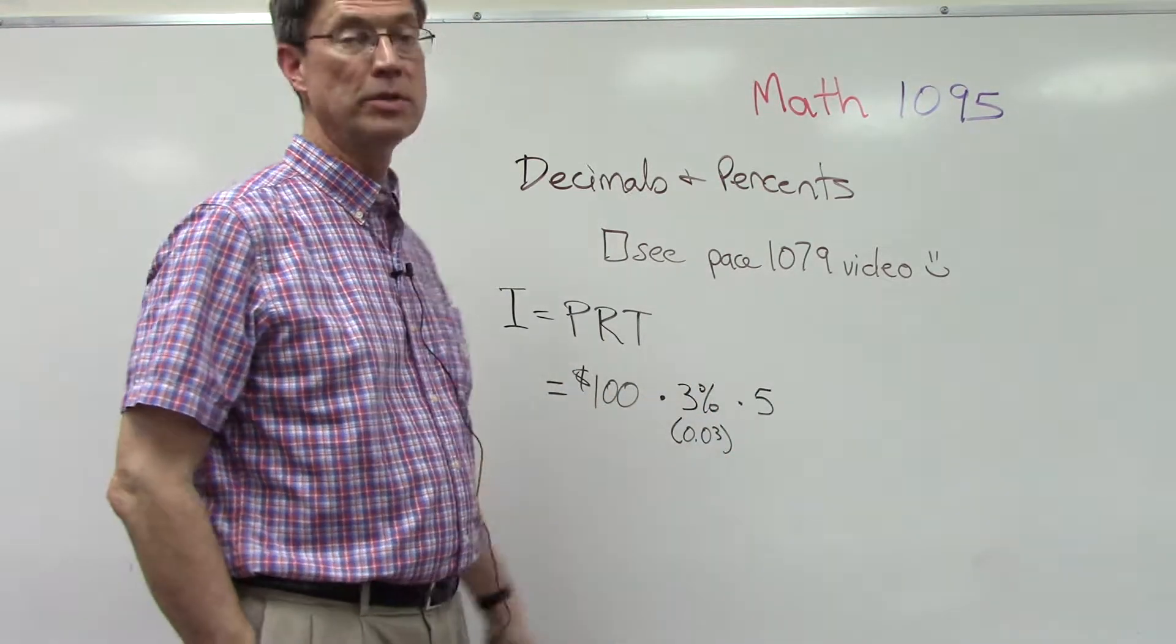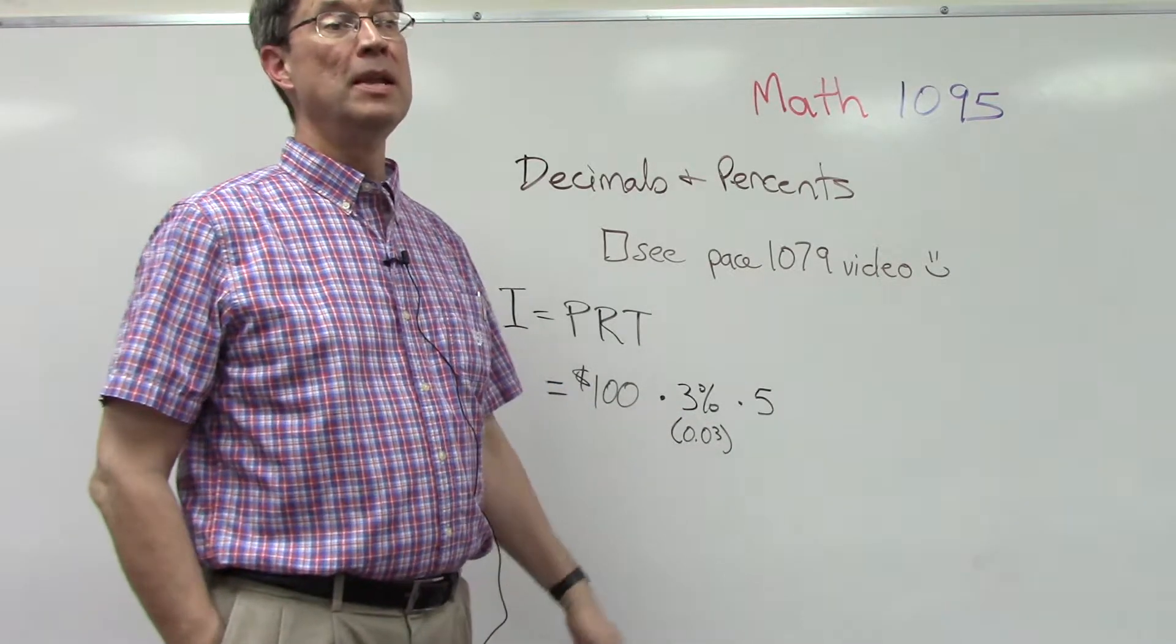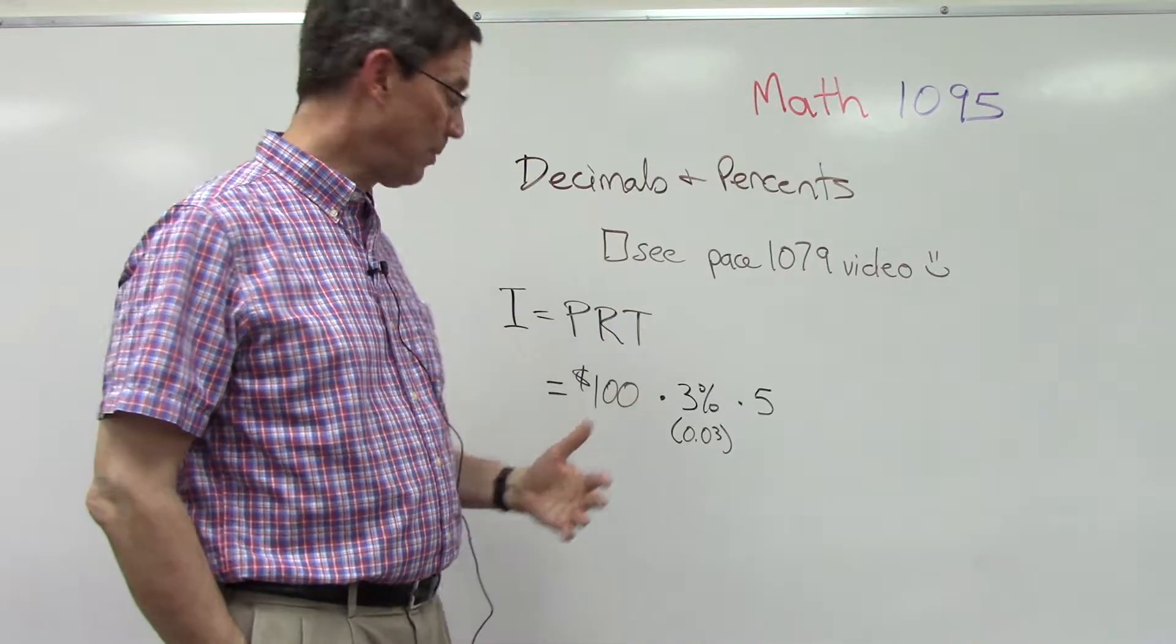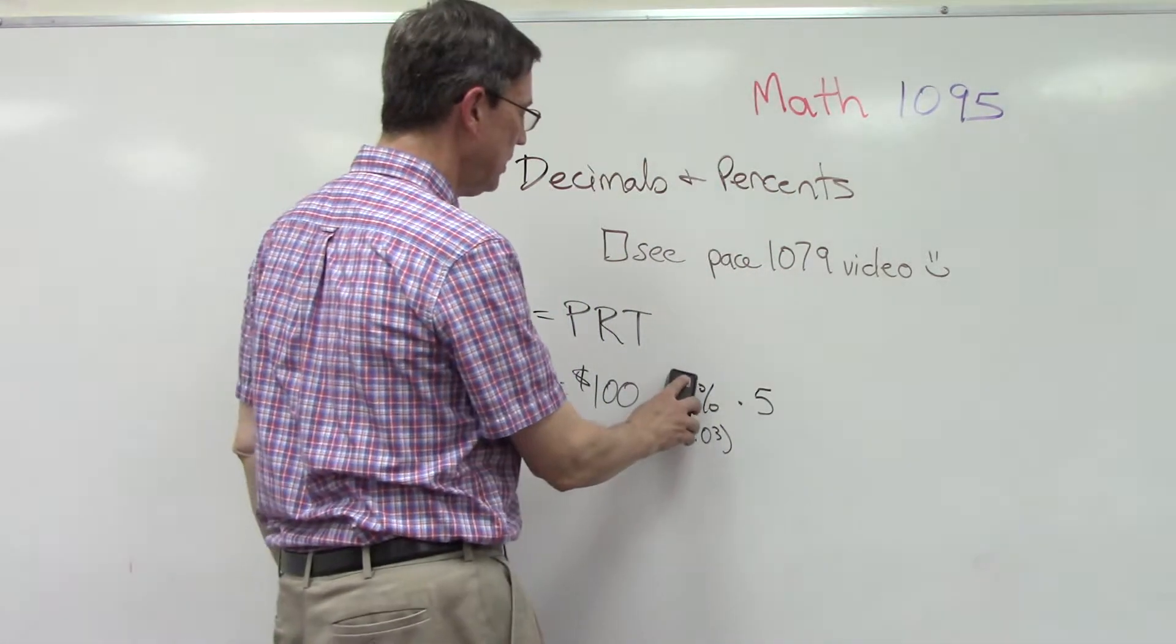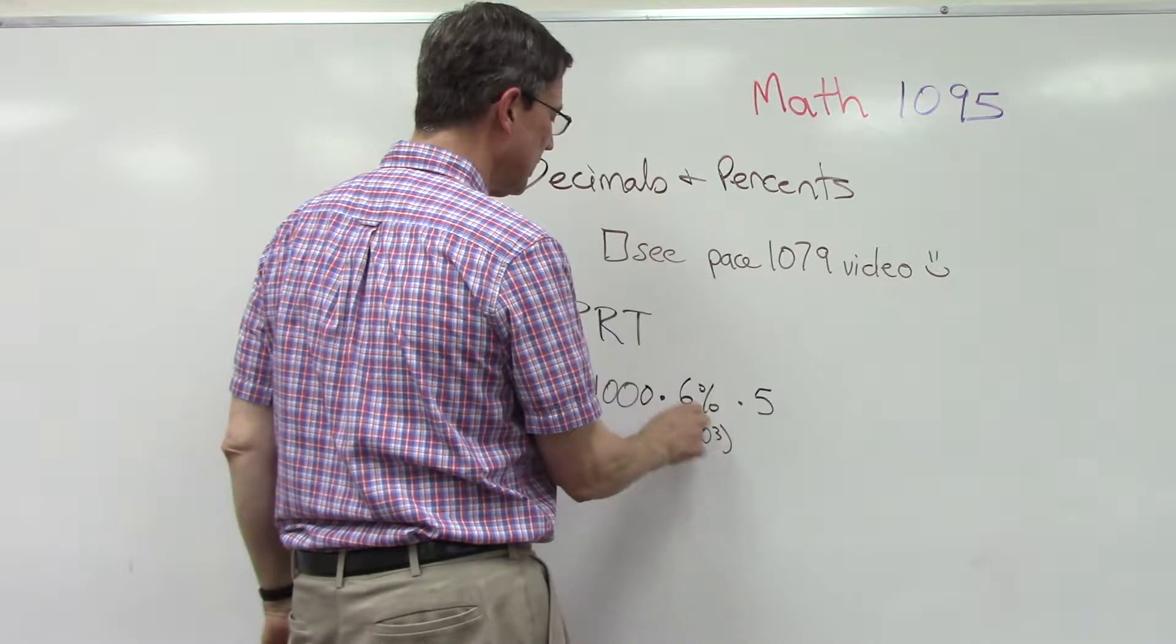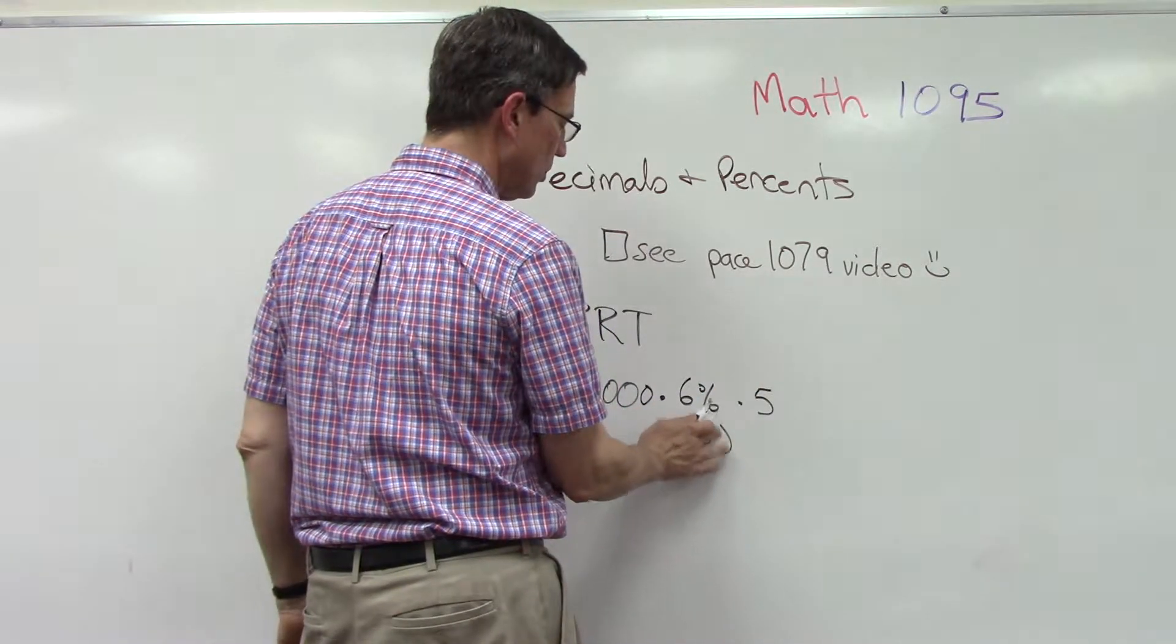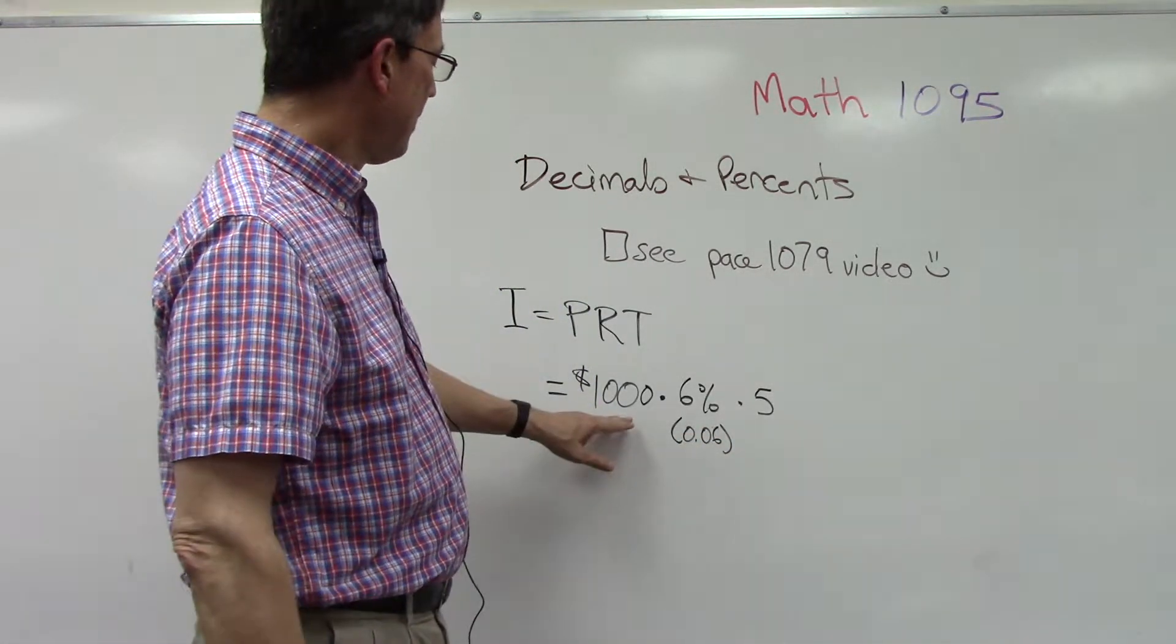Now this could also go the other way. Let's say you're borrowing money from a bank. Let's say I wanted to borrow a thousand dollars at six percent for five years.